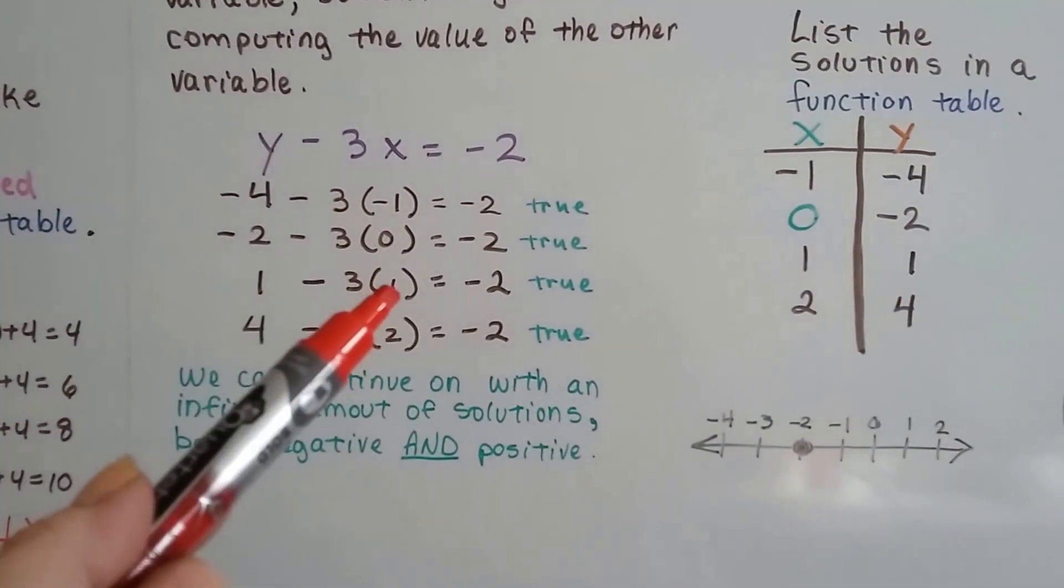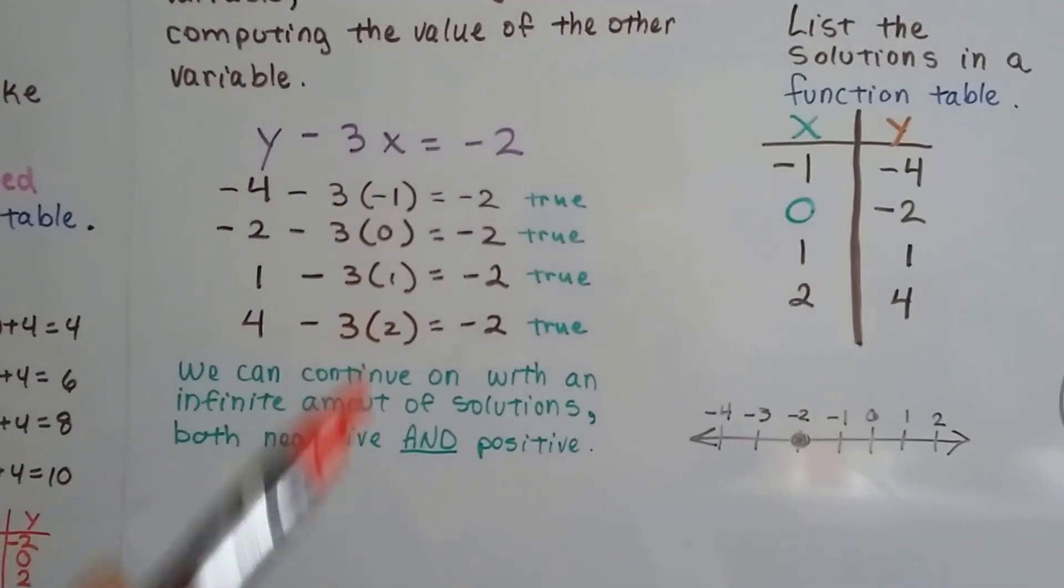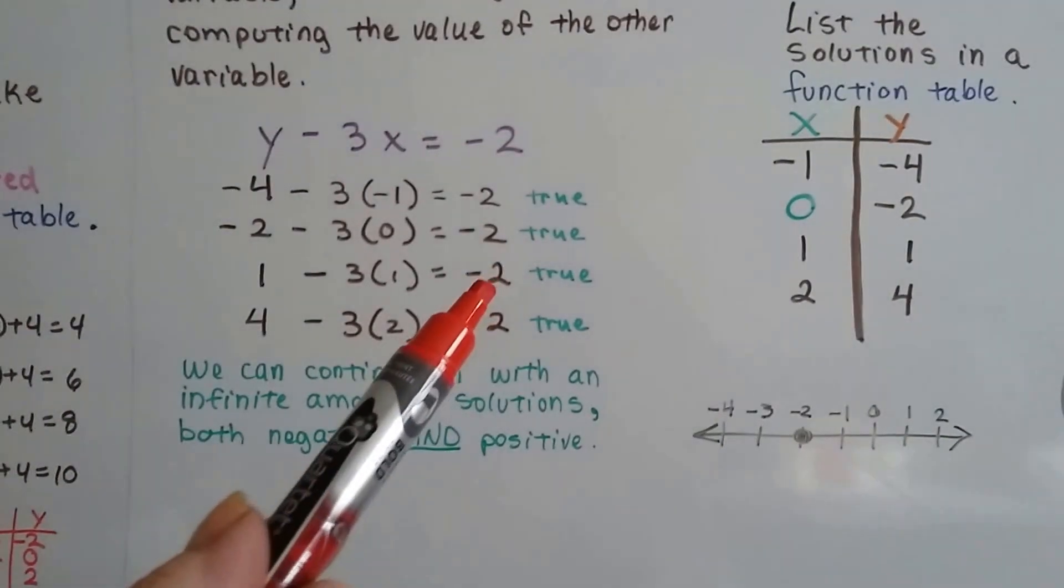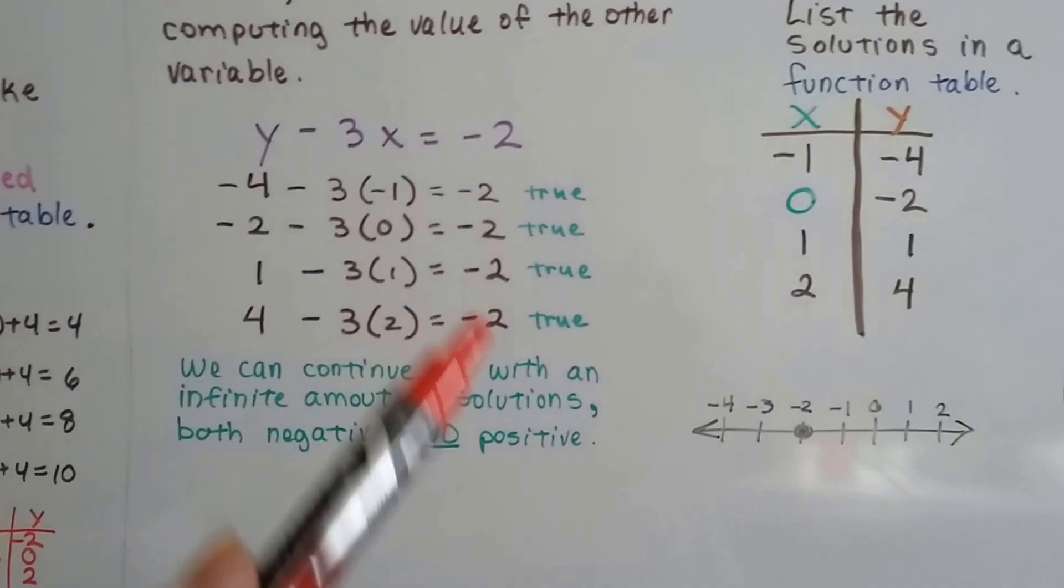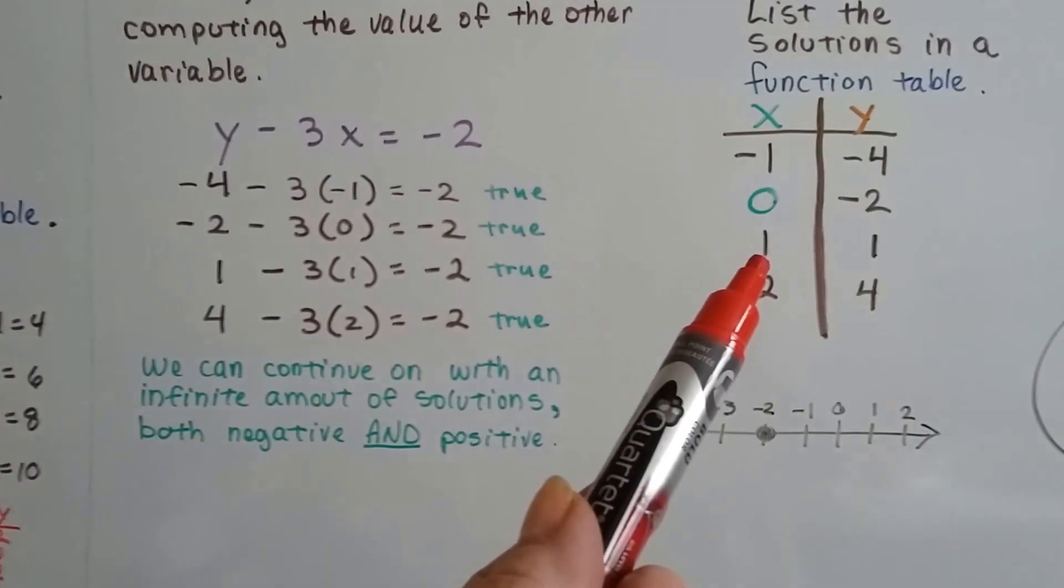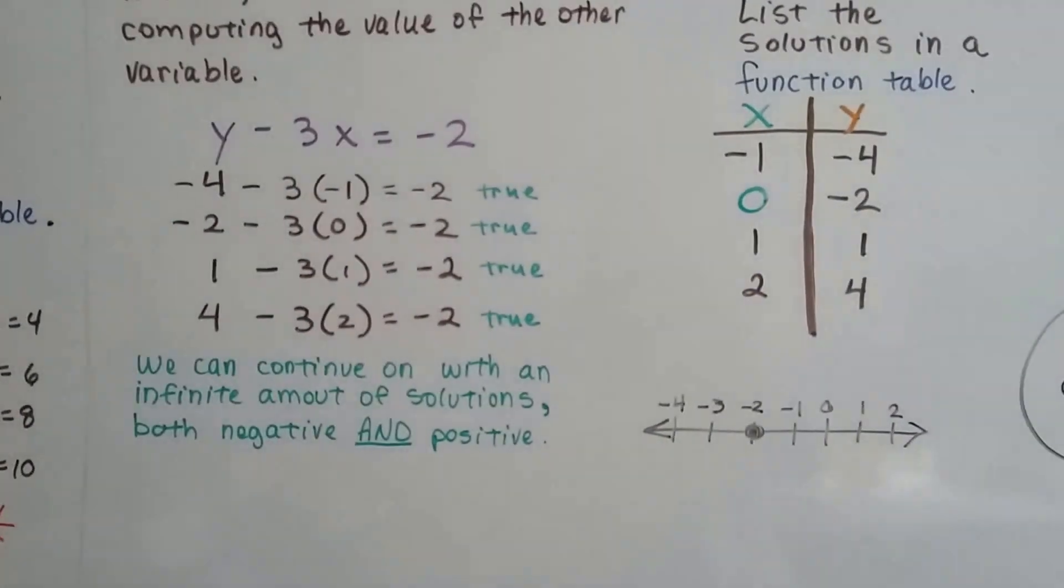And if x were a 1, we would be taking away 3 to get to a negative 2. Well, that would give us a positive 1. And we take 3 away. That gets us negative 2. So now we have 1 for x and 1 for y.